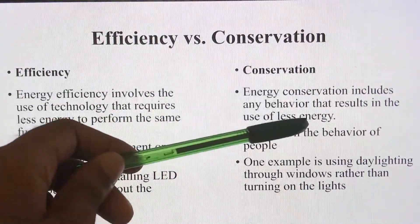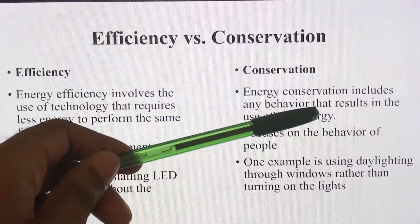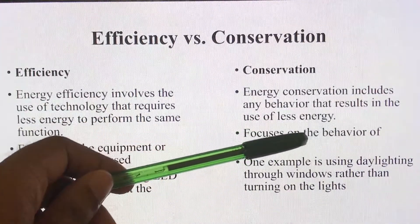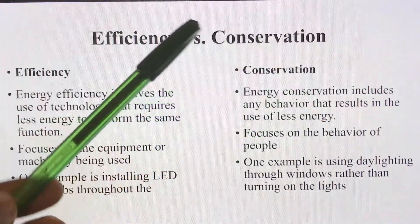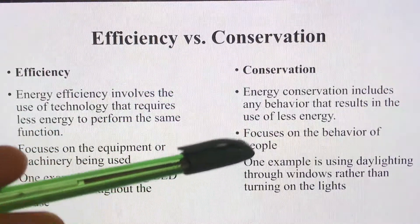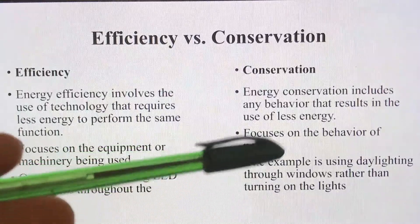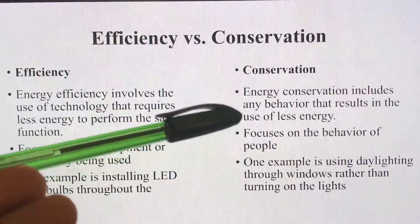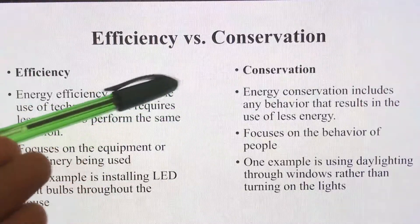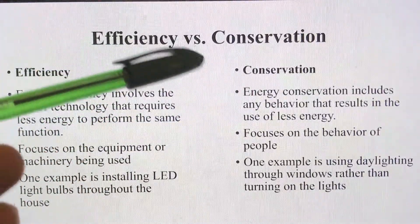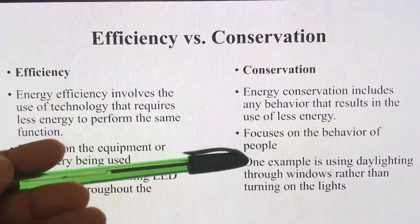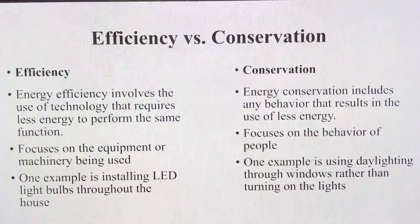Now let's go to conservation. Energy conservation includes any behavior that results in the use of less energy. Any option we have to reduce the energy we are using, or to consume less energy, is conservation. Energy less used is energy saved. The focus here is on the behavior of people.